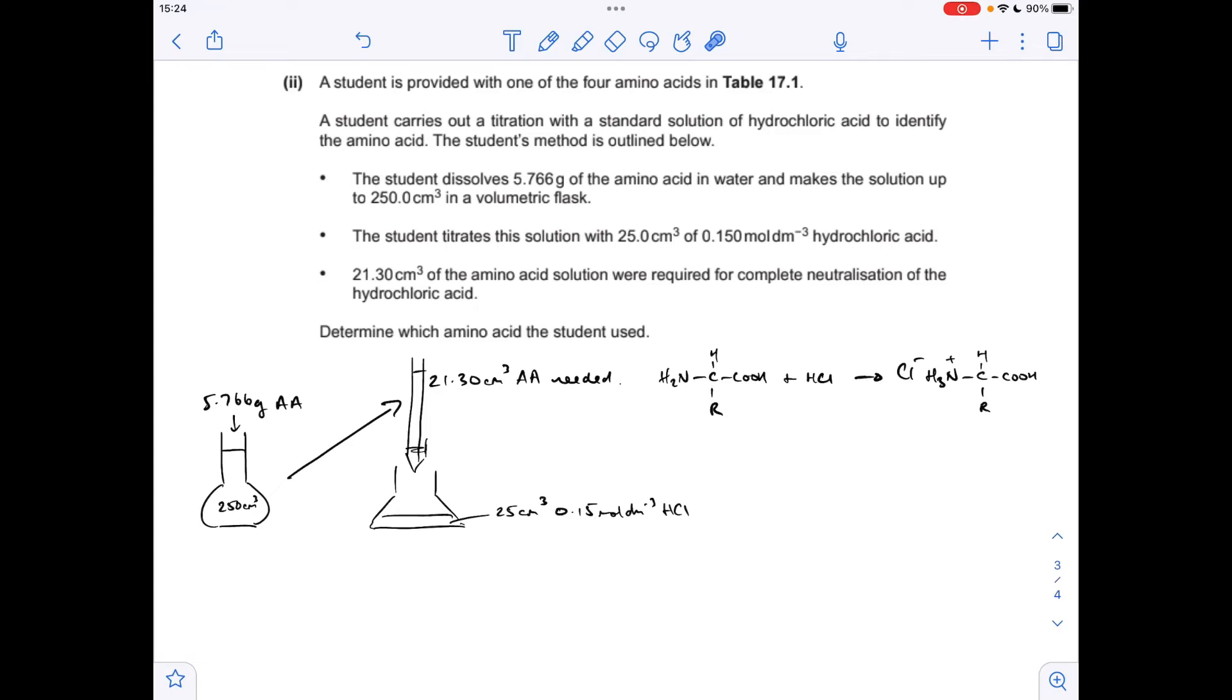Okay, so the first thing we're going to do is calculate the moles of HCl used in the titration. So it comes out at 0.00375. The moles of the alpha amino acid in that mean titre must be the same from the one-to-one ratio.